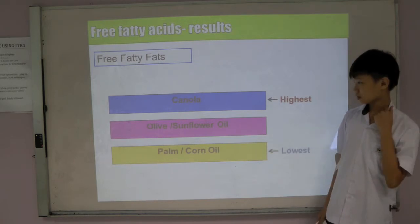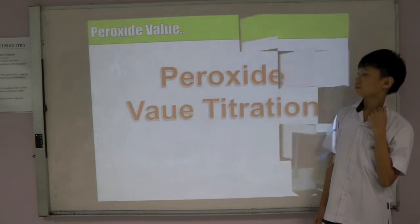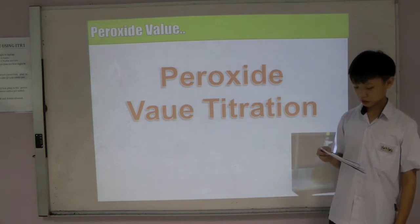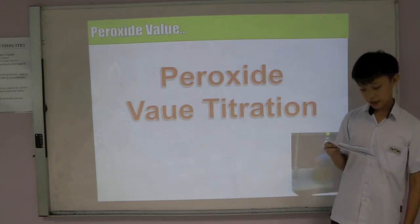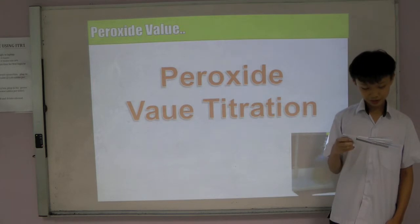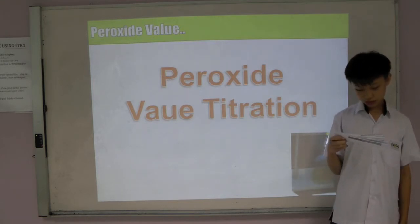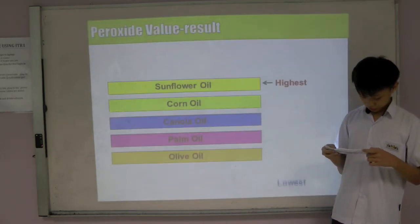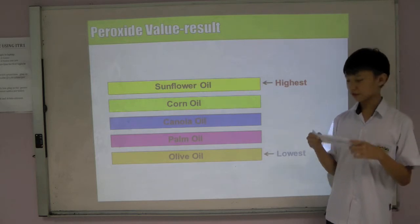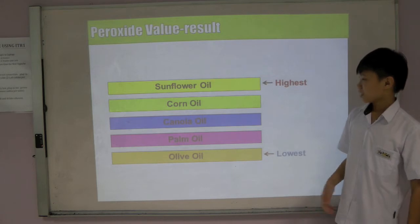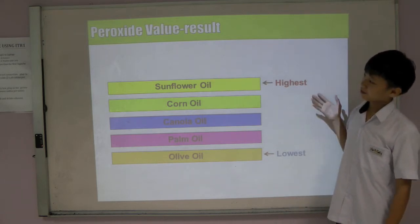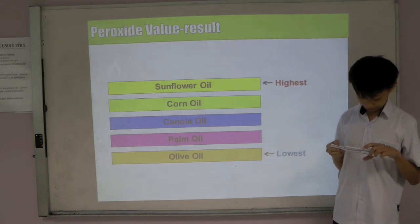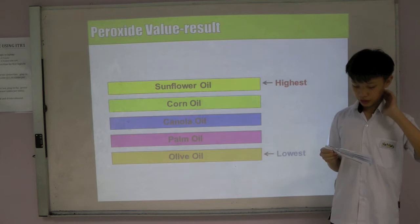We then decided to test further. We heated various oil samples continuously for 3 weeks and took samples every week. We used a formula to determine the amount of peroxides present. We found that sunflower oil had the highest peroxide value, while olive oil had the lowest amount of peroxides. This meant that sunflower oil turned rancid faster than the other oil types.